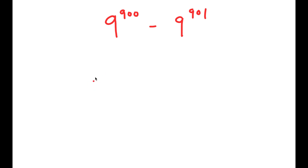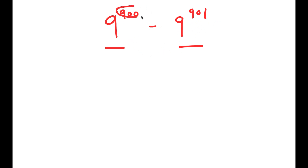So to solve this, I'm going to first start by evaluating my terms. We have 9 to the power of 900 and 9 to the power of 901. These two terms are pretty similar, except that the exponent for 9 to the power of 900 is 1 less than the exponent for 9 to the power of 901.